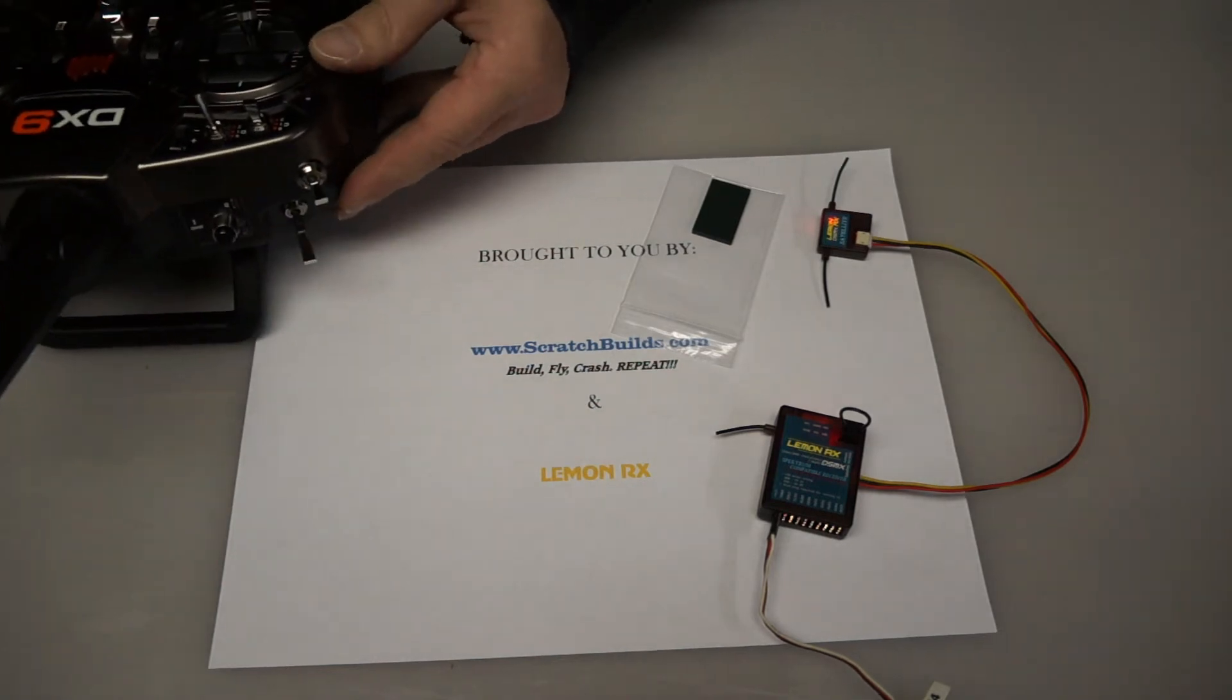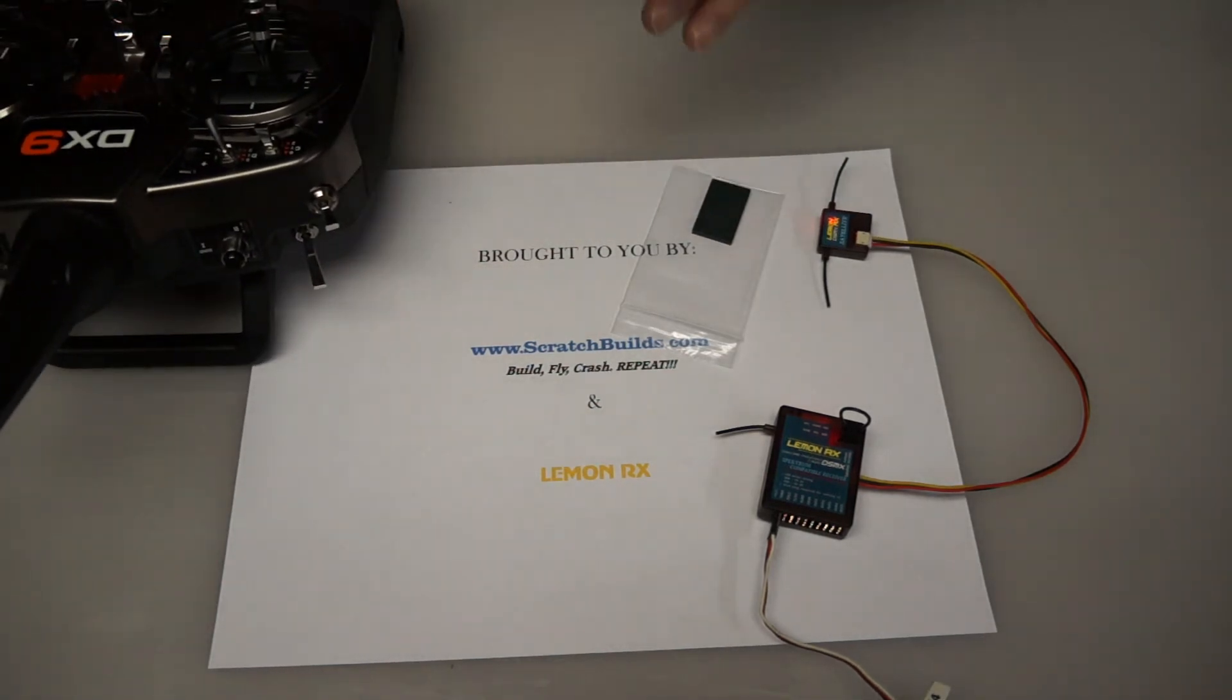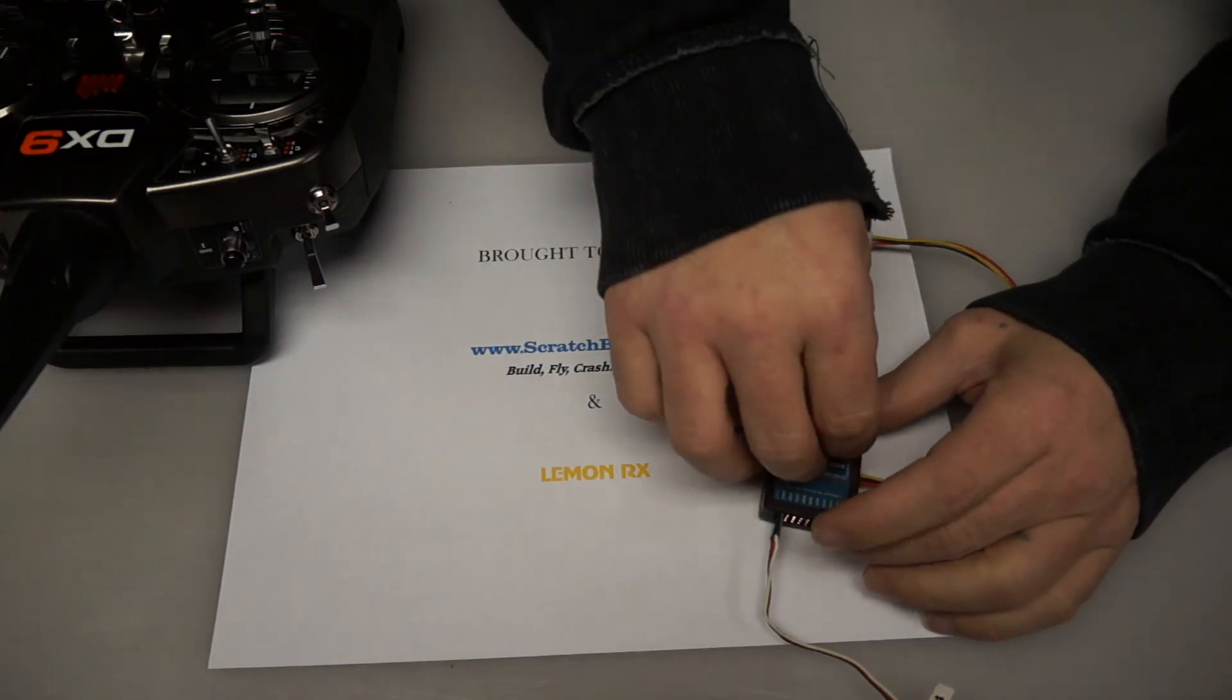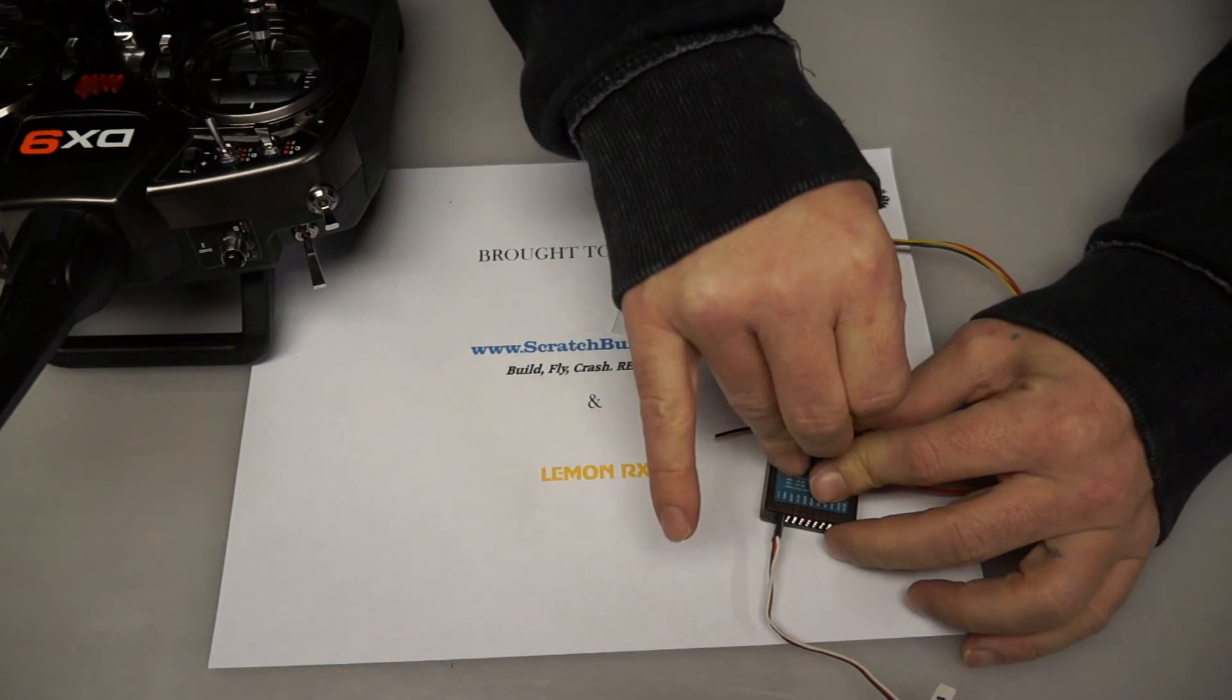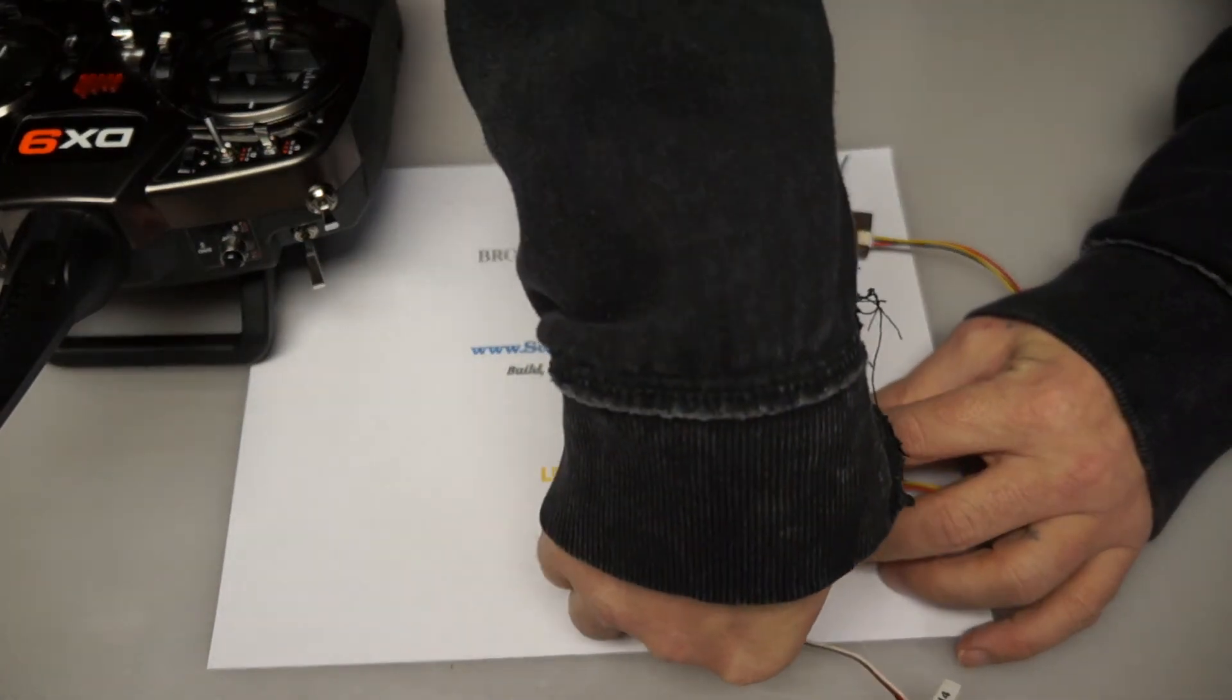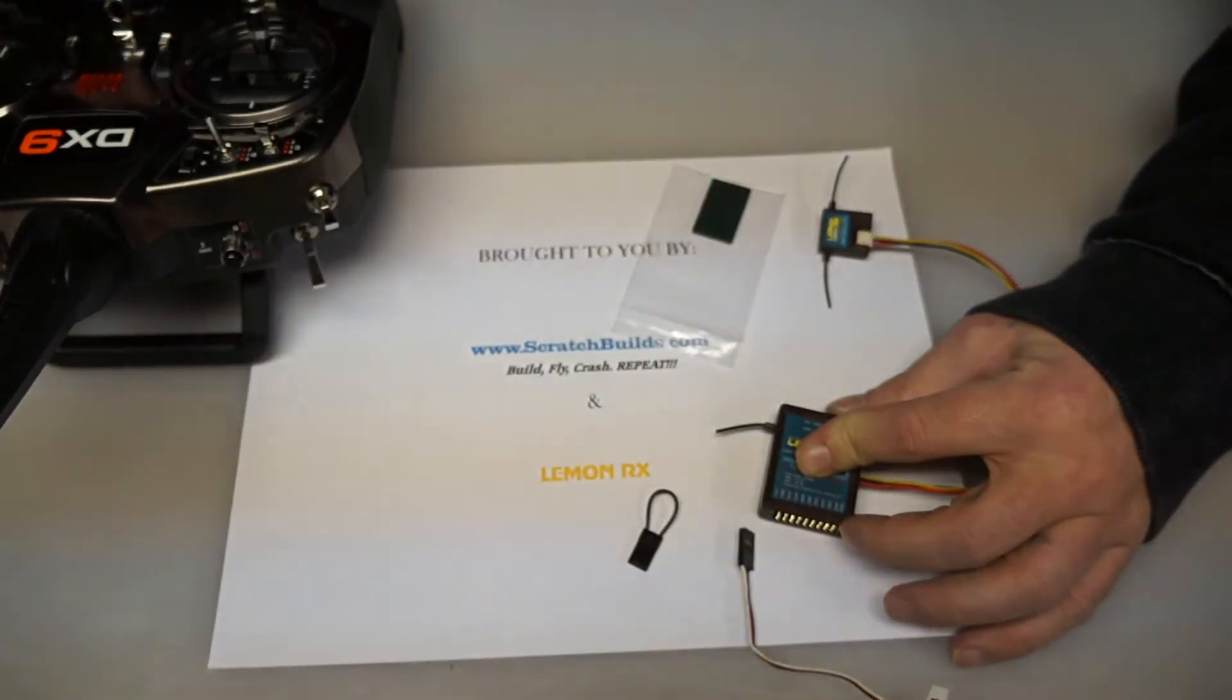So there you go. Now, according to my radio, this receiver and satellite are bound. So what we're going to do is unplug it, unplug the bind plug and remove the power from the receiver. Then we're going to turn off the radio.